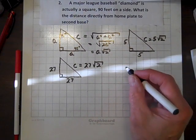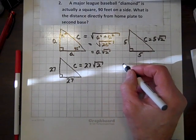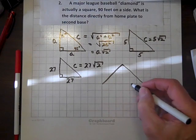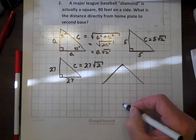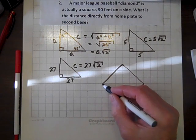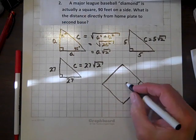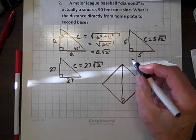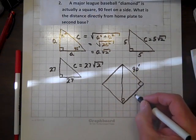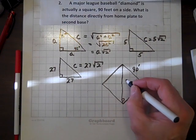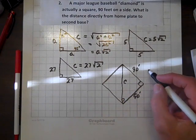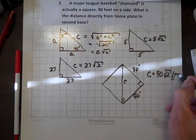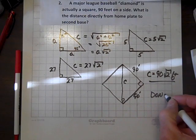Now let's consider our baseball diamond. We'll draw it — it forms a right triangle. Here's home plate. The distance from home plate to first base is 90 feet, and from first base to second base is 90 feet. So c, the distance from home plate to second base, equals 90 root 2 feet, and we are done.